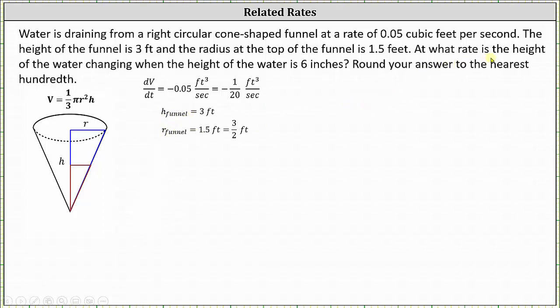We're trying to find the rate the height of the water is changing when the height of the water is six inches. So we know the height of the water is six inches, but notice everything else is in feet, and therefore we'll have to convert six inches to feet. Six inches equals 0.5 feet, or half a foot, and therefore h sub water is equal to six inches, which is 0.5 feet, or one half a foot.